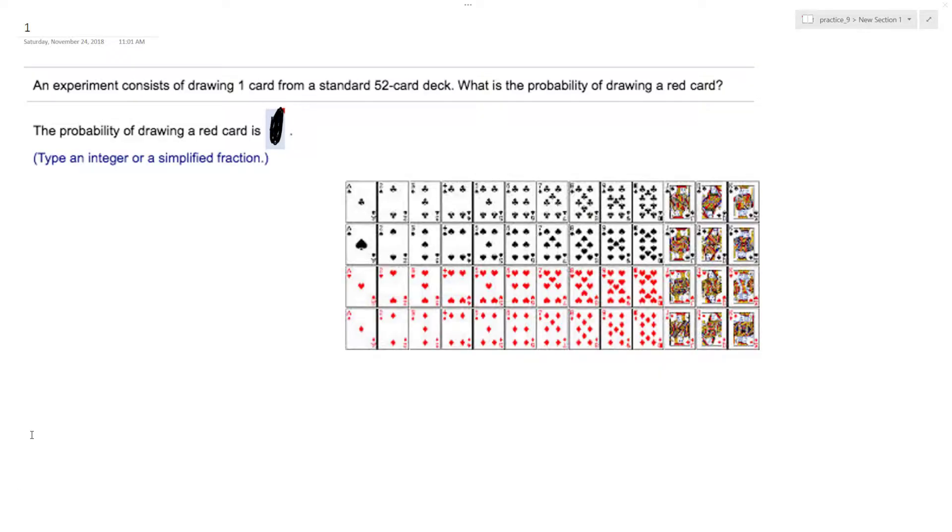So we want to figure out the probability of drawing a red card out of a deck of 52 cards. I've got a picture here of a deck of cards. If you look here, the red cards take up half the amount of cards.